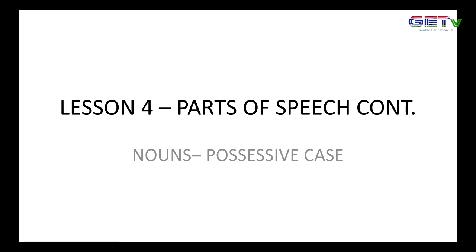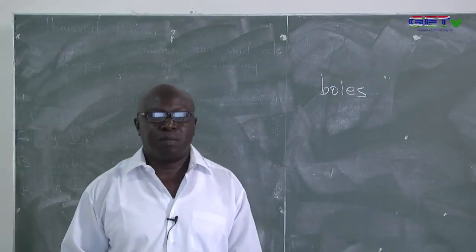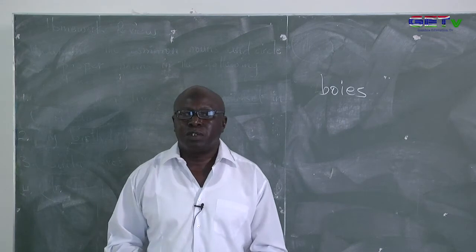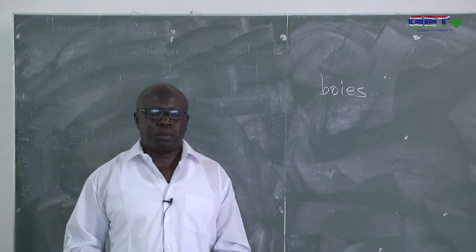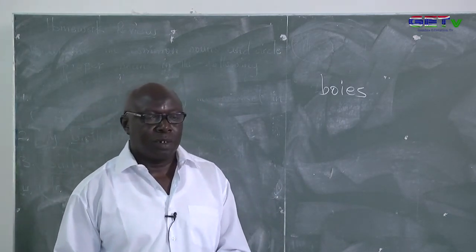There are nouns that end with f, fe — we just change the f to v and add es. There are some that don't follow the rule like chief and so on. There are nouns that do not follow any of the rules, like man becomes men, child becomes children, sheep becomes sheep, and so on and so forth.